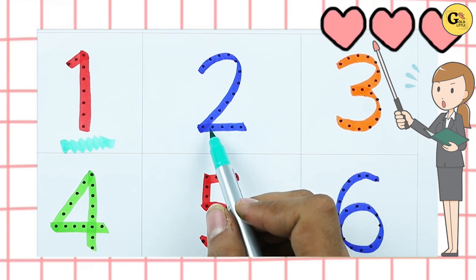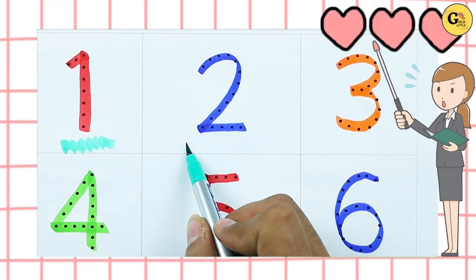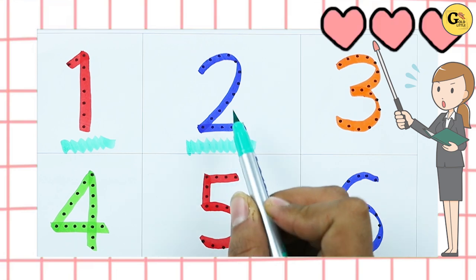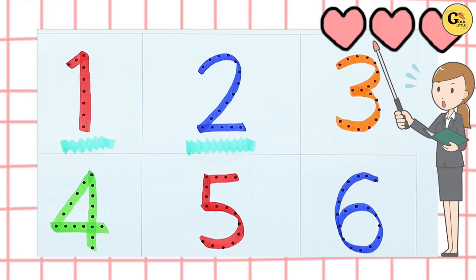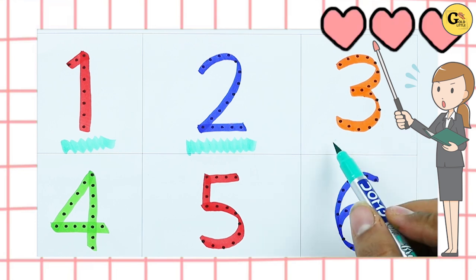Which color is this? Tell me. Yes, right, it's blue color, number 2. Which color is this? Orange, right, it's number 3.